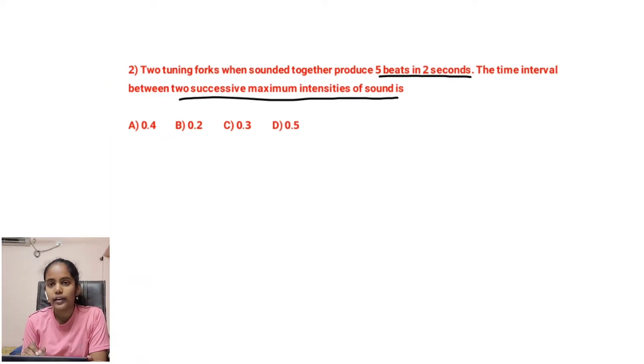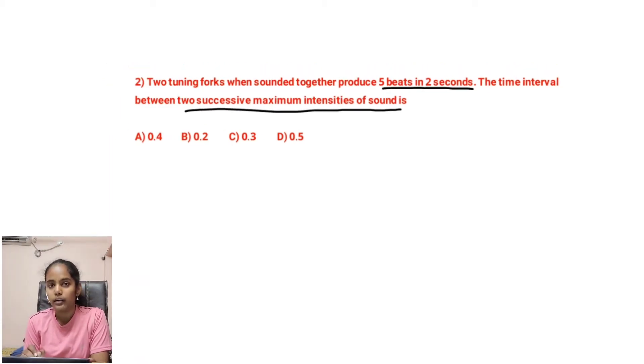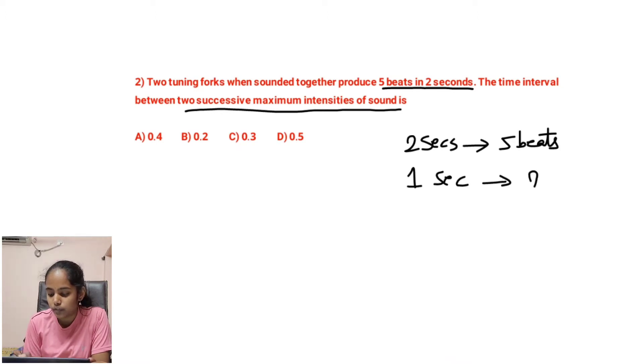First we will find out beat frequency. Beat frequency is nothing but number of beats produced per second, right? So in 2 seconds, 5 beats are produced. Then for 1 second, how many beats are produced? We have to find. So it is 5 by 2, that is 2.5. Now n₁ minus n₂, that is beat frequency, becomes 2.5.